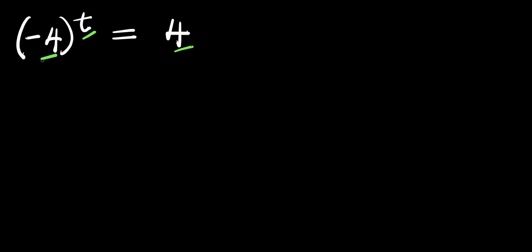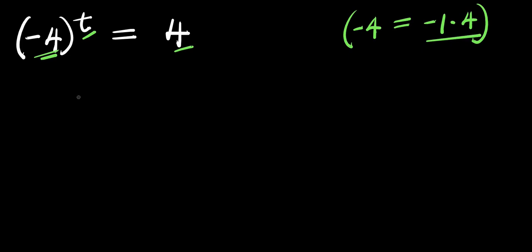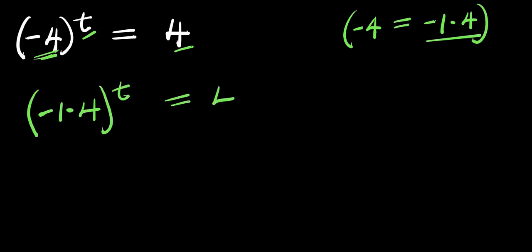Now, we have our negative 4. Negative 4 equals negative 1 times 4, so we are going to replace this with negative 1 times 4. We have negative 1 times 4 raised to the power of t, and this equals 4.